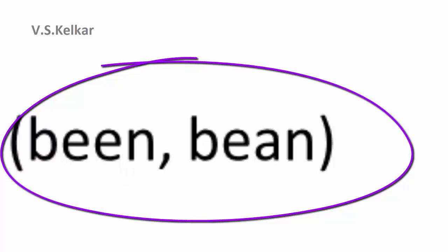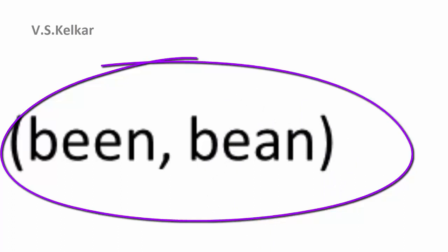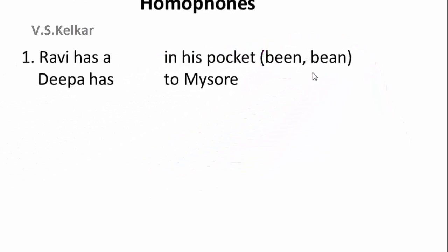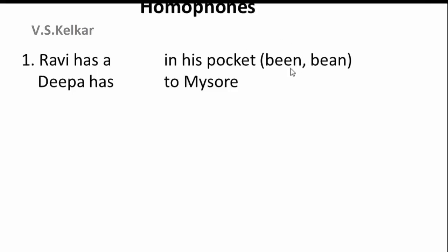How to pronounce this? The word B-E-E-N is pronounced as 'been,' and the other word B-E-A-N is also pronounced as 'been.' So both are pronounced the same way. One is used as a helping verb form, and the other is a noun — referring to a type of vegetable, as in 'beans.'